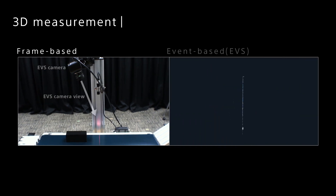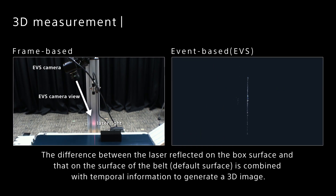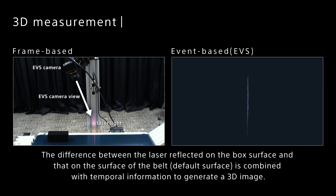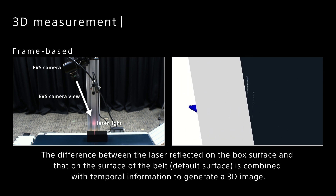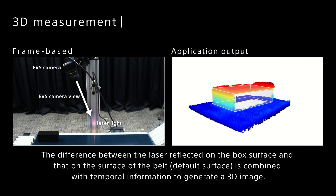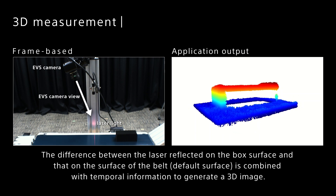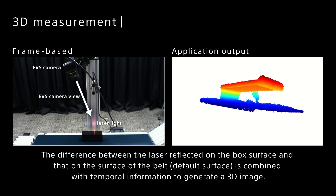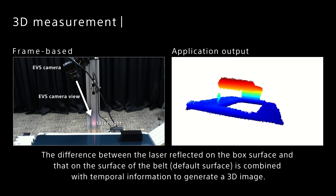3D measurement. By detecting the reflected light from the laser, the object is 3D measured. The difference between the laser reflected on the box surface and that on the surface of the conveyor belt is combined with temporal information to generate a 3D image. Only the point where the reflected light returns to EVS acquires the height information and outputs it as a point cloud. The high temporal resolution enables us to obtain detailed height information with enhanced accuracy.